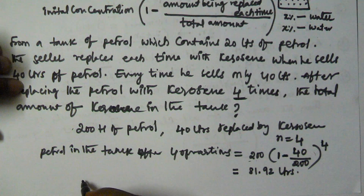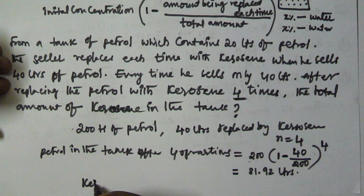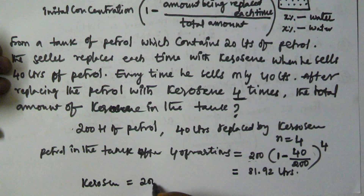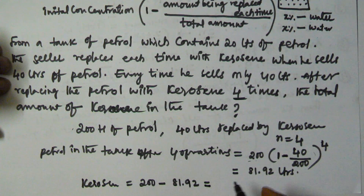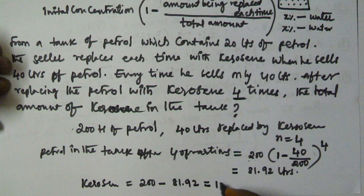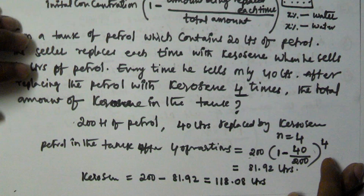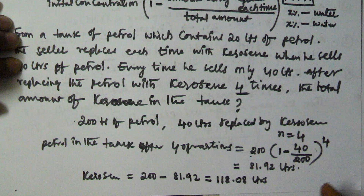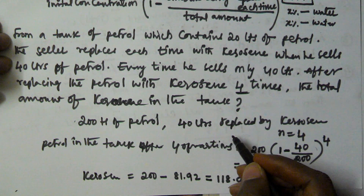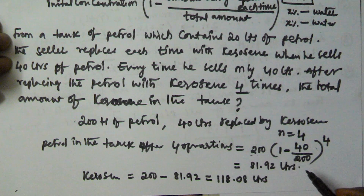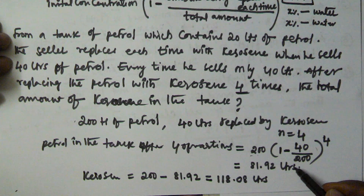So to get the kerosene we subtract petrol from the total quantity. Kerosene is equivalent to 200 minus 81.92, which equals 118.08 liters. So this is the amount of kerosene in the tank after 4 operations, where each time 40 liters of petrol is replaced. I hope you got this one, thank you very much for watching this video, please subscribe to my channel.